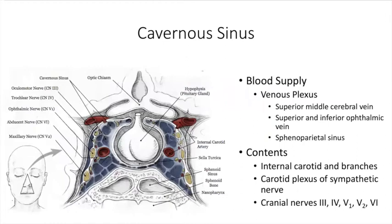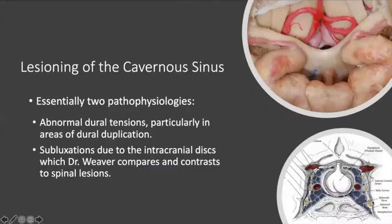Looking at the cavernous sinus, we see a blood supply of vast venous plexus. Its contents include the internal carotids and branches, carotid plexus of sympathetic nerves, and effects on cranial nerves: oculomotor, trochlear, V1 and V2 from trigeminal, and the abducens nerve. Lesioning of the cavernous sinus essentially led, according to Dr. Weaver, to two pathologies: abnormal dural tensions particularly in the area of dural duplication, or subluxations due to intracranial discs, which Dr. Weaver compares with spinal lesions or spinal subluxations. What her particular treatment was for these things is not something I'm aware has been written down or passed on.